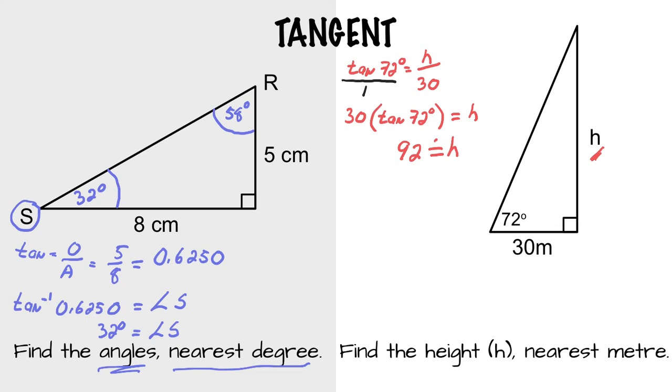And it's an approximation to the nearest meter. So that's the tangent ratio used two different ways. One's to find the degree and one's to find a length.